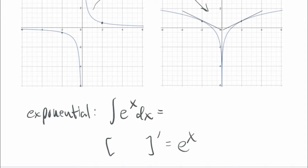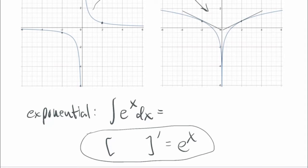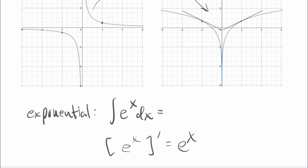Exponential function: the antiderivative of e^x. If you start with something and find the derivative to get e^x, what would that be? Well, the derivative of e^x is e^x. So e^x + C is the antiderivative of e^x.